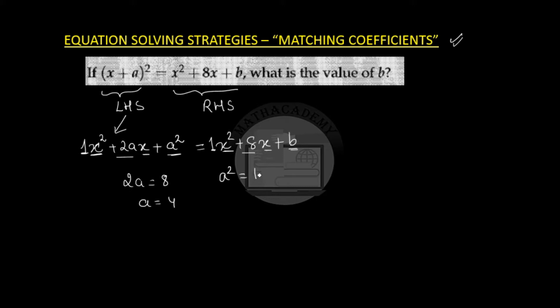So a square should be equal to b. a is 4 and we get b as 4 square which is 16.